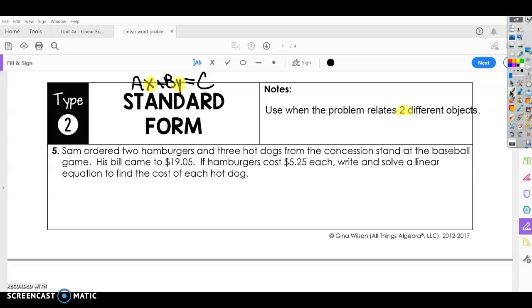Okay, alright, let's look at number five. Sam ordered two hamburgers and three hot dogs from the concession stand at the baseball game. His bill came to $19.05. If hamburgers cost $5.25 each, write and solve a linear equation to find the cost of each hot dog.